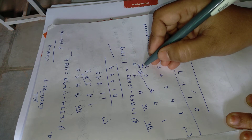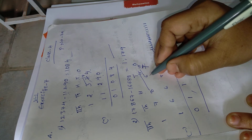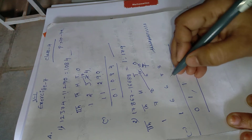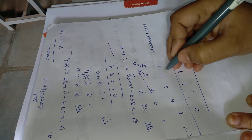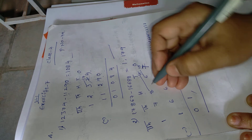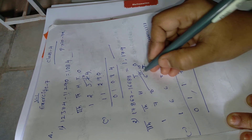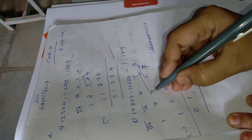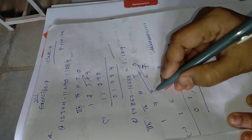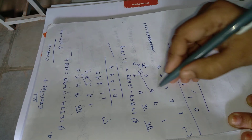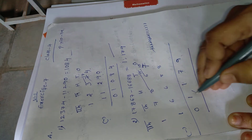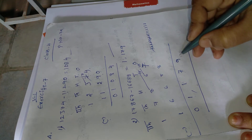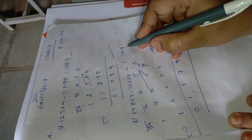One borrow was taken, so the remaining digit is 5. Is 5 minus 8 possible? No. Why? Because 5 is the smaller number and 8 is the bigger number. So we use one borrow again. 15 minus 8 equals 7. One borrow was given from the 8, so remaining digit is 7. 7 minus 6 equals 1. 1 minus 1 equals 0. So how much is the answer? 1,179.